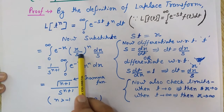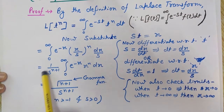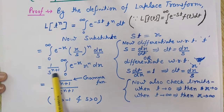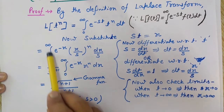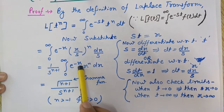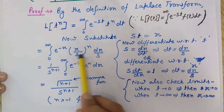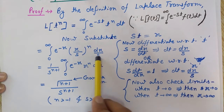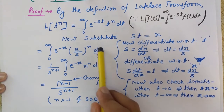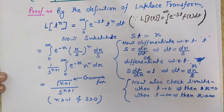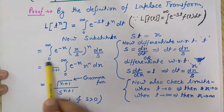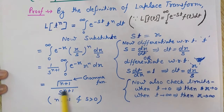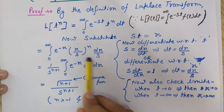The s in the denominator from (x/s)^n gives a factor of 1/s^n, and the dx/s contributes another 1/s, giving 1/s^(n+1) in the denominator. So we have 1 divided by s to the power n plus 1, multiplied by the integral from 0 to infinity of e to the power minus x times x to the power n dx.